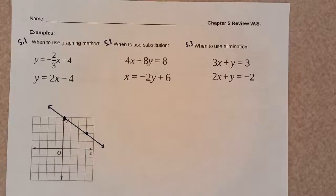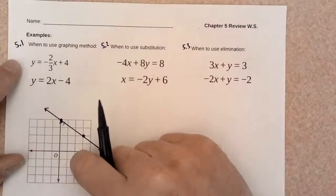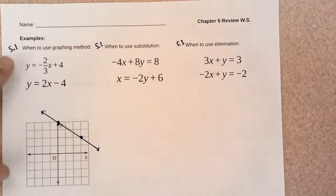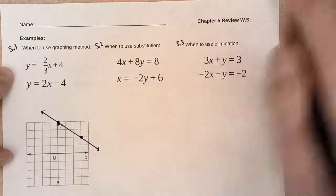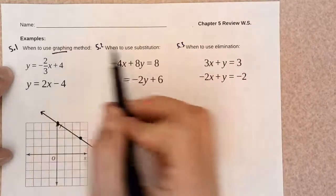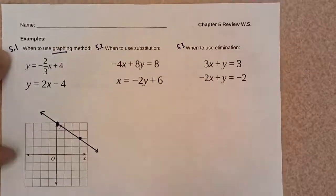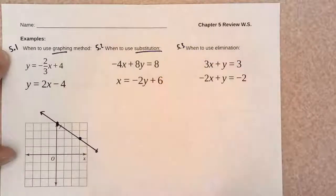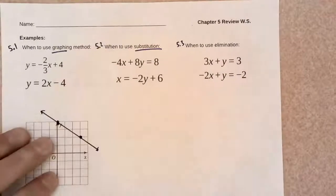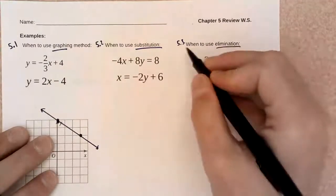Okay team, hey, here is our chapter 5 review worksheet. Chapter 5, we covered three different methods to solving systems of equations. We did the graphing method, which is 5.1, substitution method, which is 5.2, and the elimination method, that is 5.3.